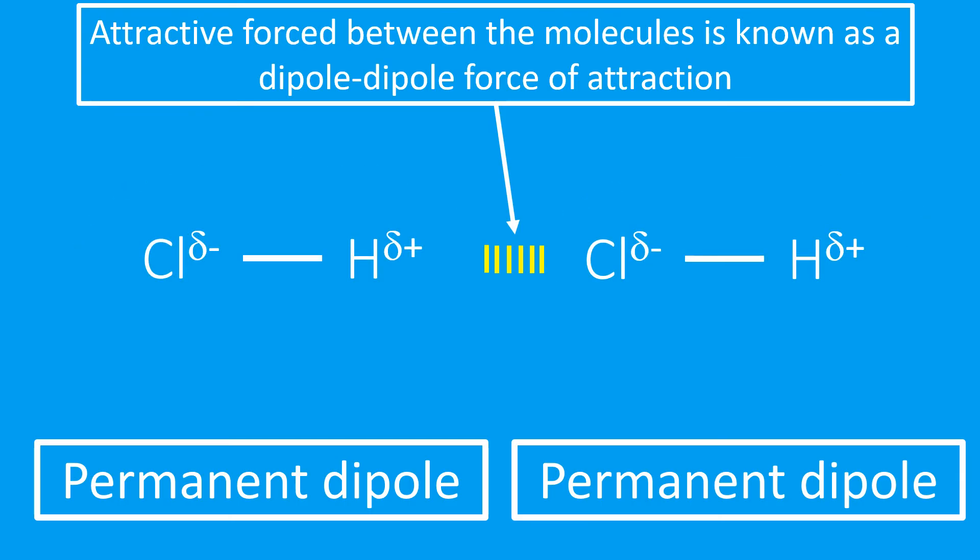So just to remind us of what these molecules look like, what we've actually got here are two HCl molecules. Here's an HCl molecule on the right-hand side. It's a polar molecule. The left-hand side is slightly negative, delta minus, and the right-hand side is slightly positive, delta positive.